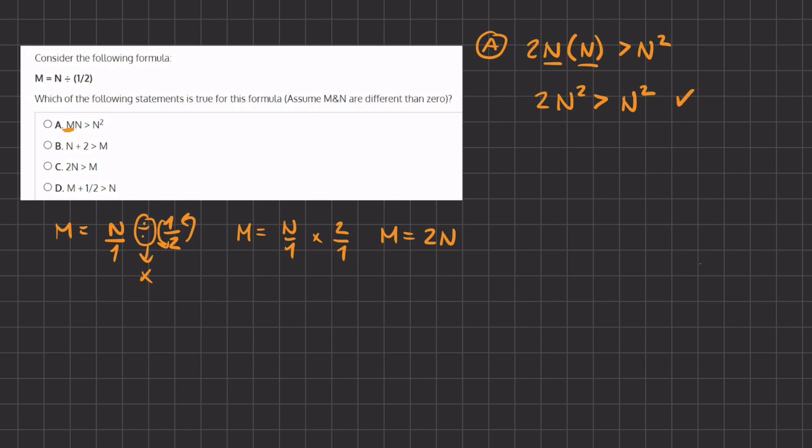And this statement is true, because if we have this coefficient of 2, and these two terms are equal to one another, this 2 means that the left hand side is 2 times greater than the right hand side. Therefore, A is the correct answer. Let's see why the other options are incorrect.